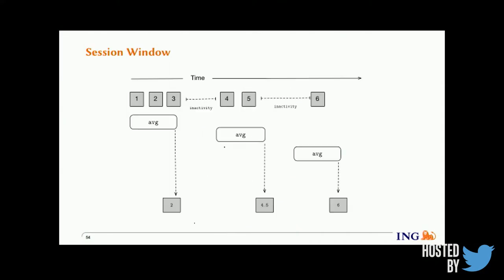There is a third kind of window: the session window. In a session window, elements are grouped based on activity — it has a notion of a gap in activity. Whenever a gap occurs, it starts a new window. It is somewhat non-deterministic but groups elements by session activity. This is one kind of window currently provided by Flink.